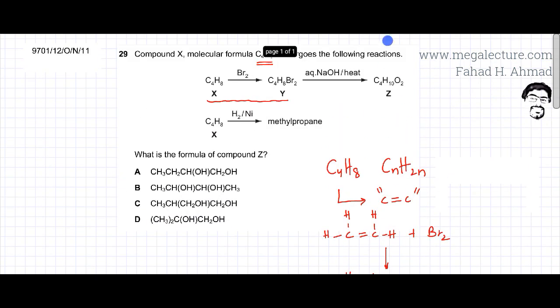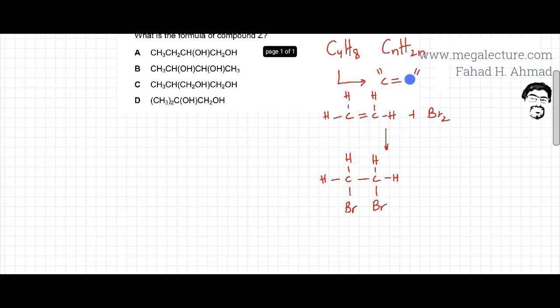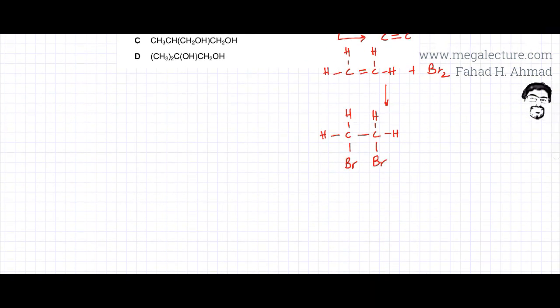And after that you have NaOH, heating it with NaOH aqueous and heat. Now this over here is nucleophilic substitution where the bromines would get substituted by OH groups. So let's do that in our example. If you heat it with NaOH aqueous and heat, the bromines would be substituted.